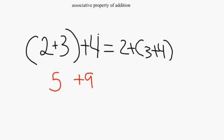In the second problem, 2 plus parentheses 3 plus 4, we would do 3 plus 4 first and that will give us 7. And then we add 2 and still get 9. So you can see that grouping does not matter.